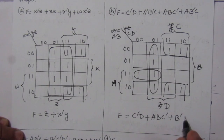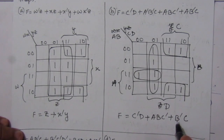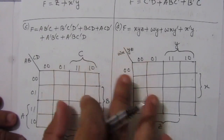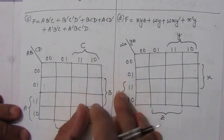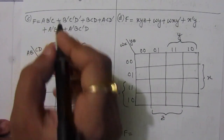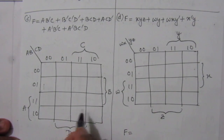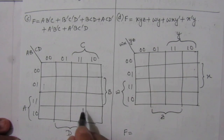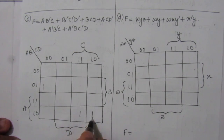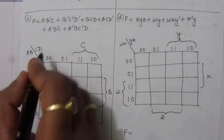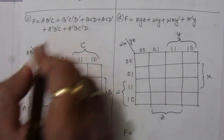This is the simplified boolean expression for the second problem. Now let us go to the third problem. We have AB-bar C: AB-bar is the fourth row, and C value is one for the third and fourth columns, so we have one-one there. Then we have B-bar C-bar D-bar: C-bar D-bar is that column, and B-bar covers the first row and the fourth row.